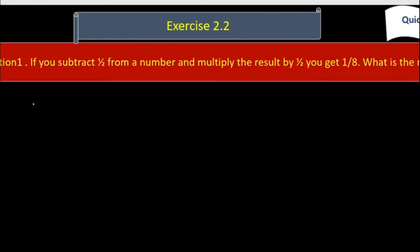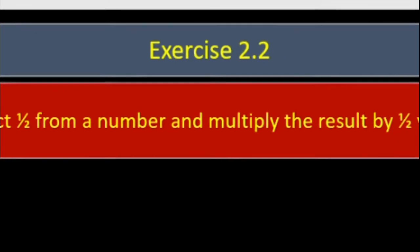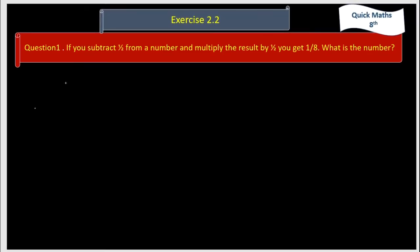Exercise 2.2, Question No. 1: If you subtract 1 by 2 from a number and multiply the result by 1 by 2, you get 1 by 8. What is the number?